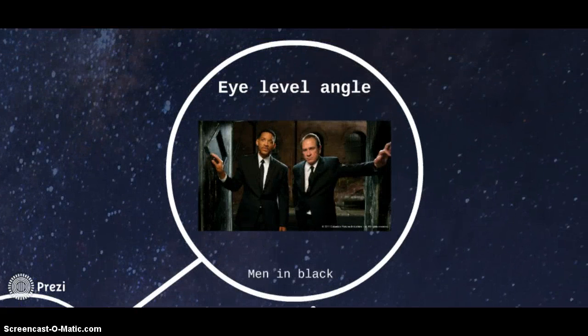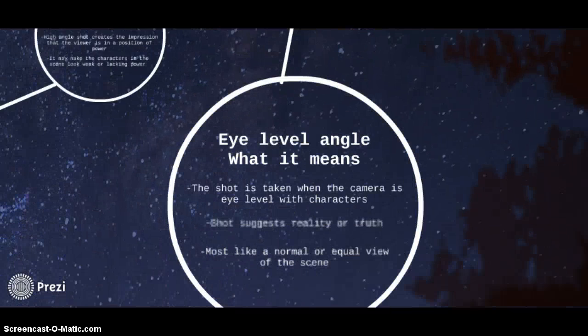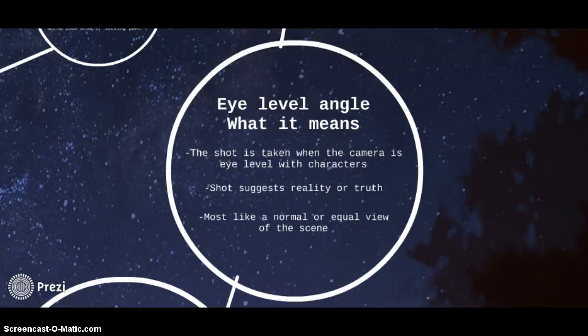The eye level angle. This is an eye level angle shot used in Men in Black. The shot is taken when the camera is eye level with the characters. The shot suggests reality or truth and is most like a normal or equal view of the scene.